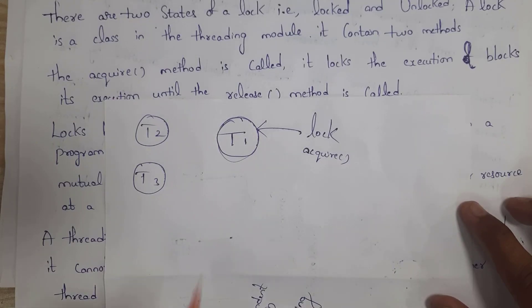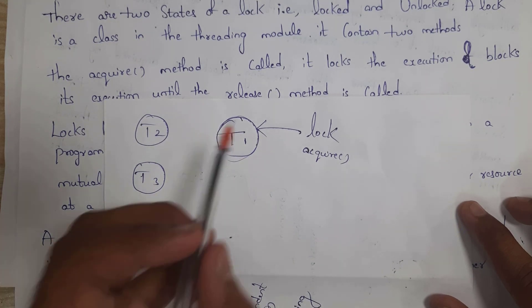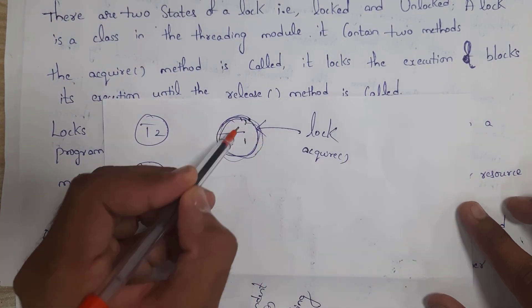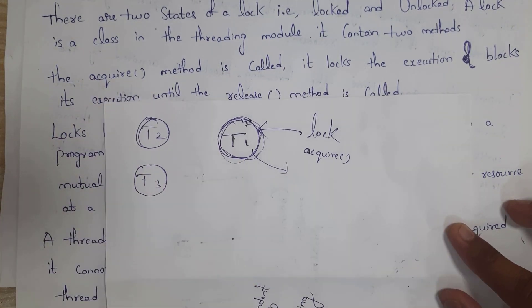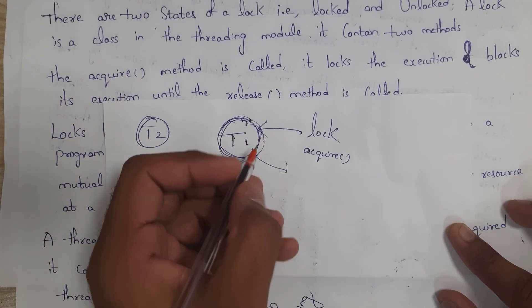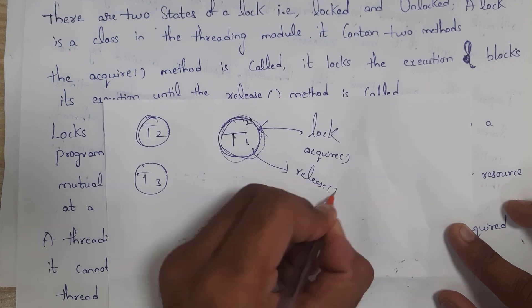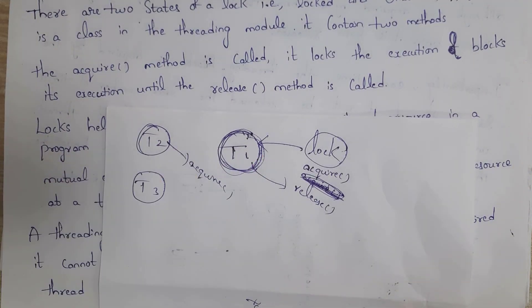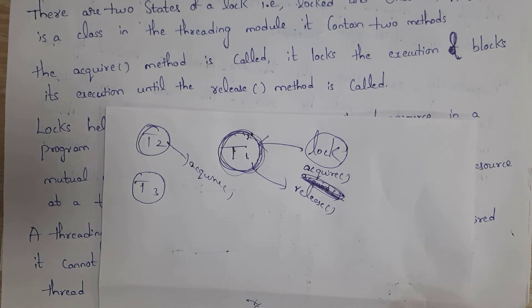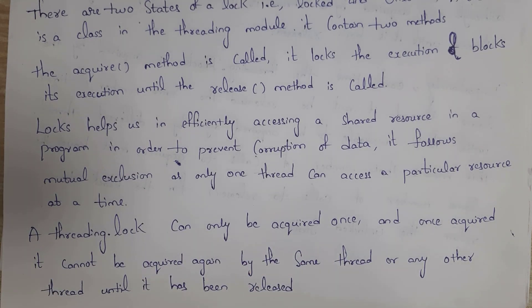A threading Lock can be acquired only once, and once acquired, it cannot be acquired again by the same thread or any other thread until it has been released. For example, with threads T1, T2, and T3 — if thread T1 acquires the lock, then T2 and T3 cannot acquire it. Only if T1 releases the lock can T2 or T3 acquire it. For a particular thread, we can acquire the lock only once — we cannot acquire it more than once.